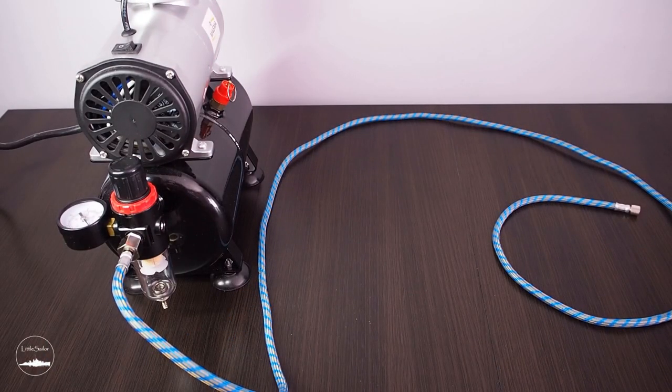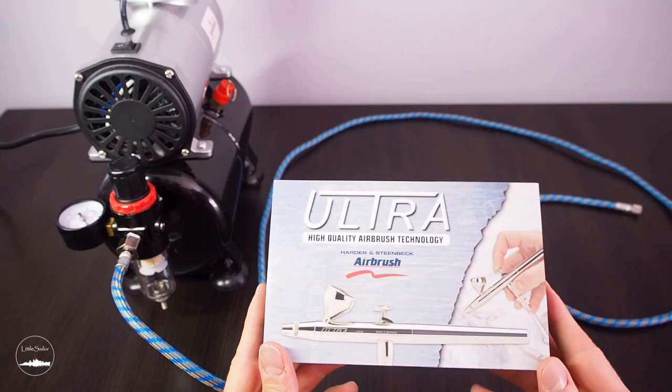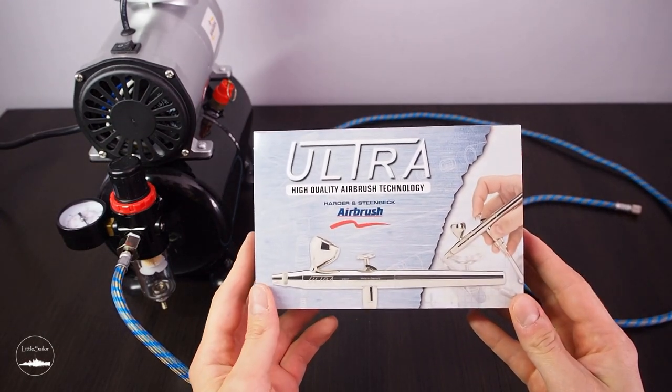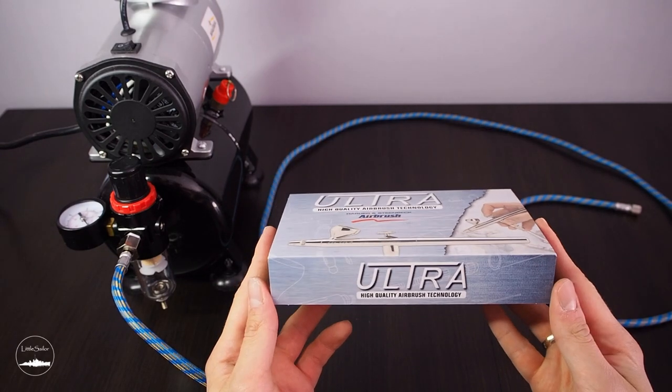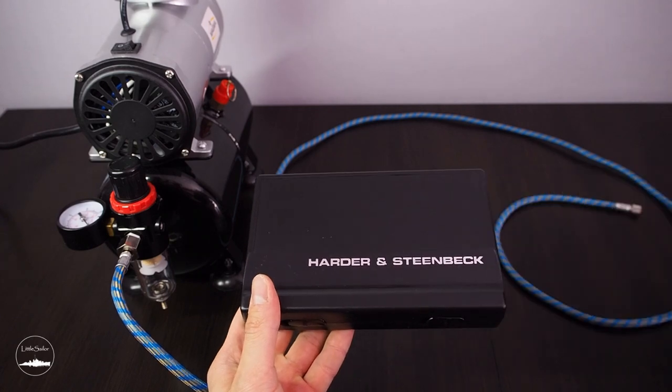Time has come for the most important element, the airbrush. Harder and Steenbeck Ultra. As for me the choice was obvious. This German company provides very high quality equipment. It's the cheapest version from this brand but many modelers recommend this model for beginners.